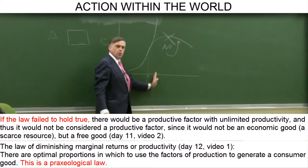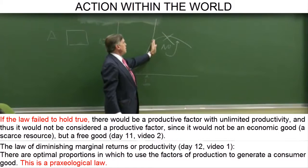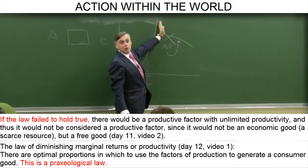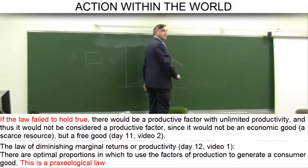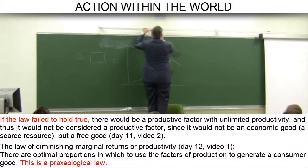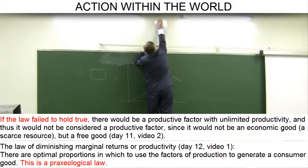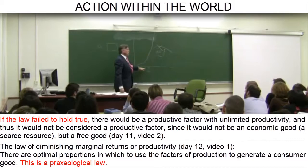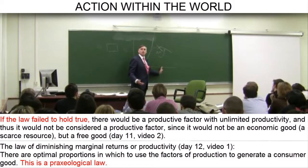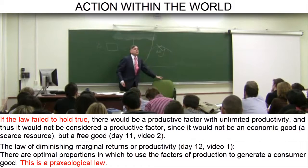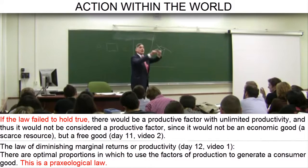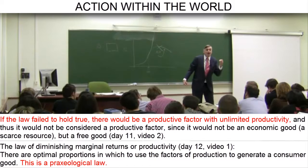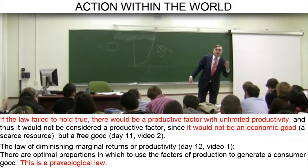If the law did not hold true — our a contrario sensu demonstration — it would mean that an increase in the units of the variable factor, in our example workers, would still result in a more than proportional increase in the final product, in our example potatoes. We would keep sending in workers, and the output of potatoes would keep going up — past the ceiling, to the next floor, the third floor, the fourth floor, all the way to the heavens. We could achieve any unlimited output of potatoes simply by raising the number of workers. And what would this mean with respect to the fixed factor — the plot of land in our example? It would mean that the plot of land had unlimited productive capacity, and therefore that it was not an economic good, a scarce resource, but a free good.